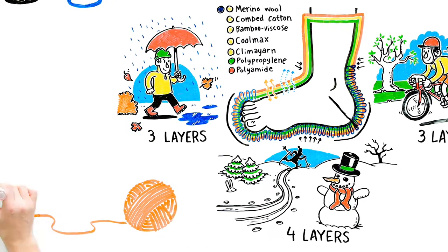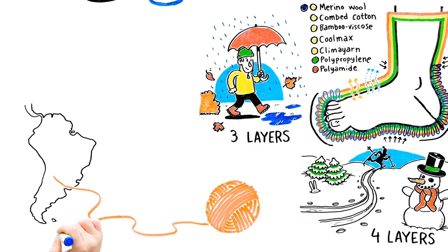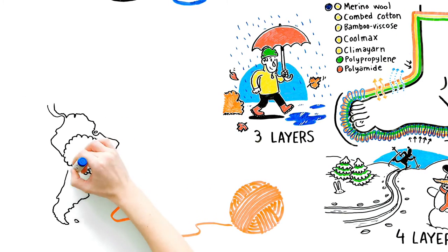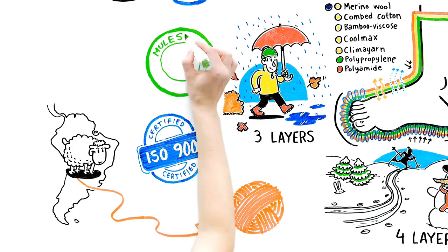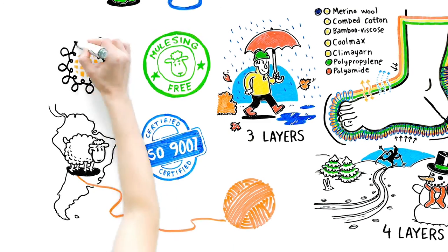Here at Sukkamestarit, we know the origins of our raw materials and the conditions in which our products are made. So we can guarantee that our high-quality socks are manufactured ethically and are eco-friendly.